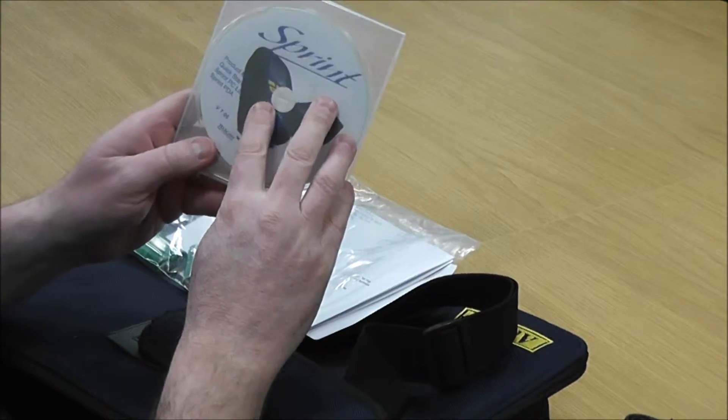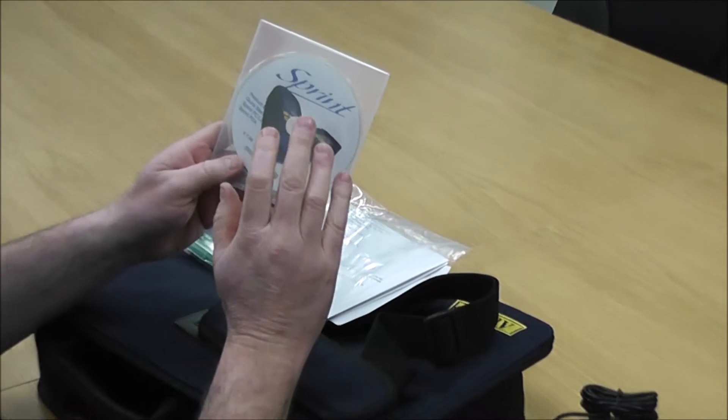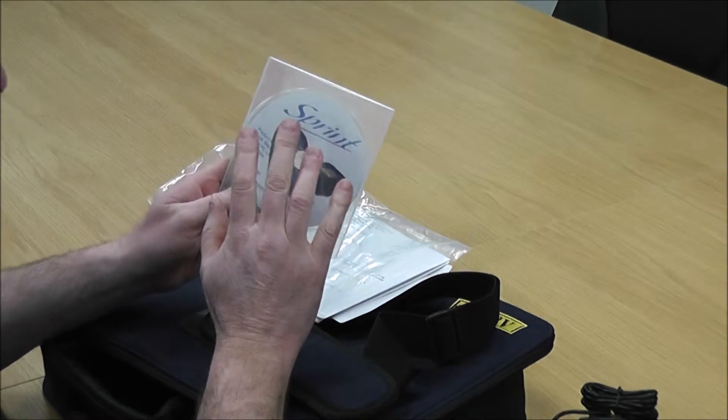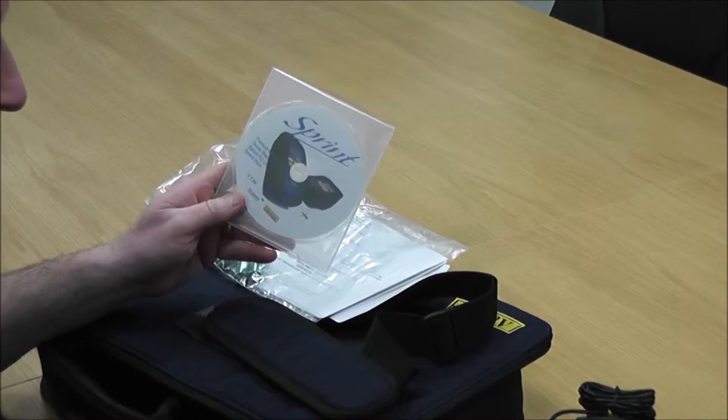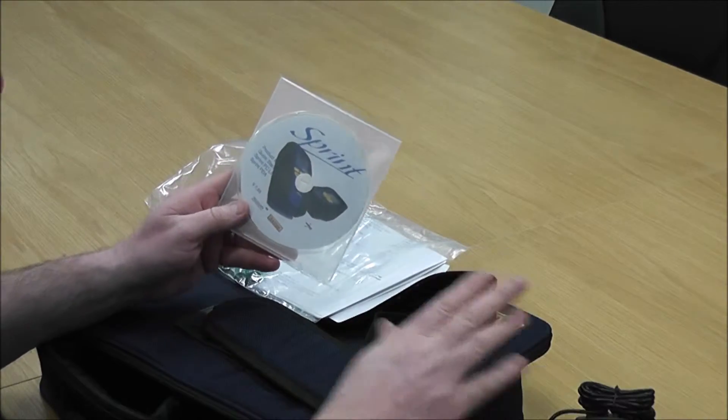There's a disc with your instructions, quick guide, and software. If you want to use the Sprint Mobile function, you'll need to get it from the Play Store—it's free of charge.